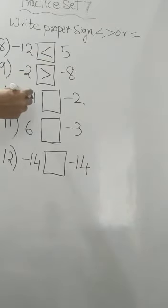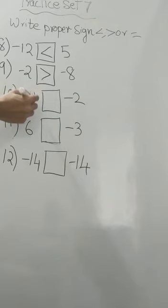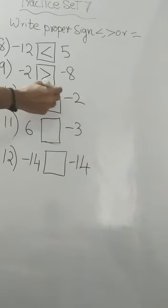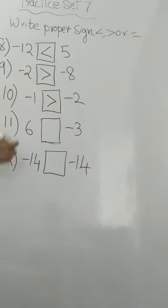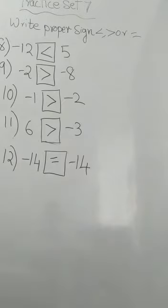Next, minus 1 and minus 2. Which comes at the left side? Minus 2. After 0, it is minus 1, then minus 2. So minus 2 is less than minus 1. Next, 6 and minus 3. 6 is a positive one, so that is greater. And minus 14 and minus 14. They are equal numbers. So this is practice set 7.